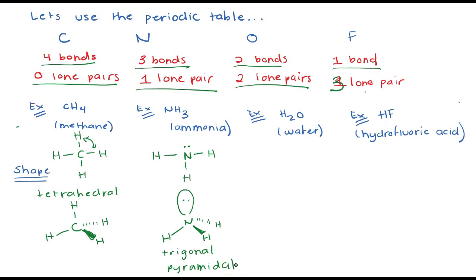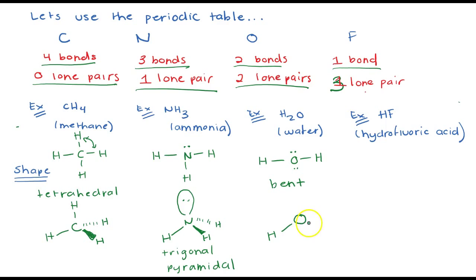The next example is water. If we draw the Lewis structure, water always has a bent shape because it has two lone pairs that take up a little more room than the two bonds. We have oxygen in the center with two hydrogens, one lone pair coming out toward you, and one lone pair going into the screen. For hydrofluoric acid, we won't worry about its shape. The three shapes I want you to know are tetrahedral, trigonal pyramidal, and bent.